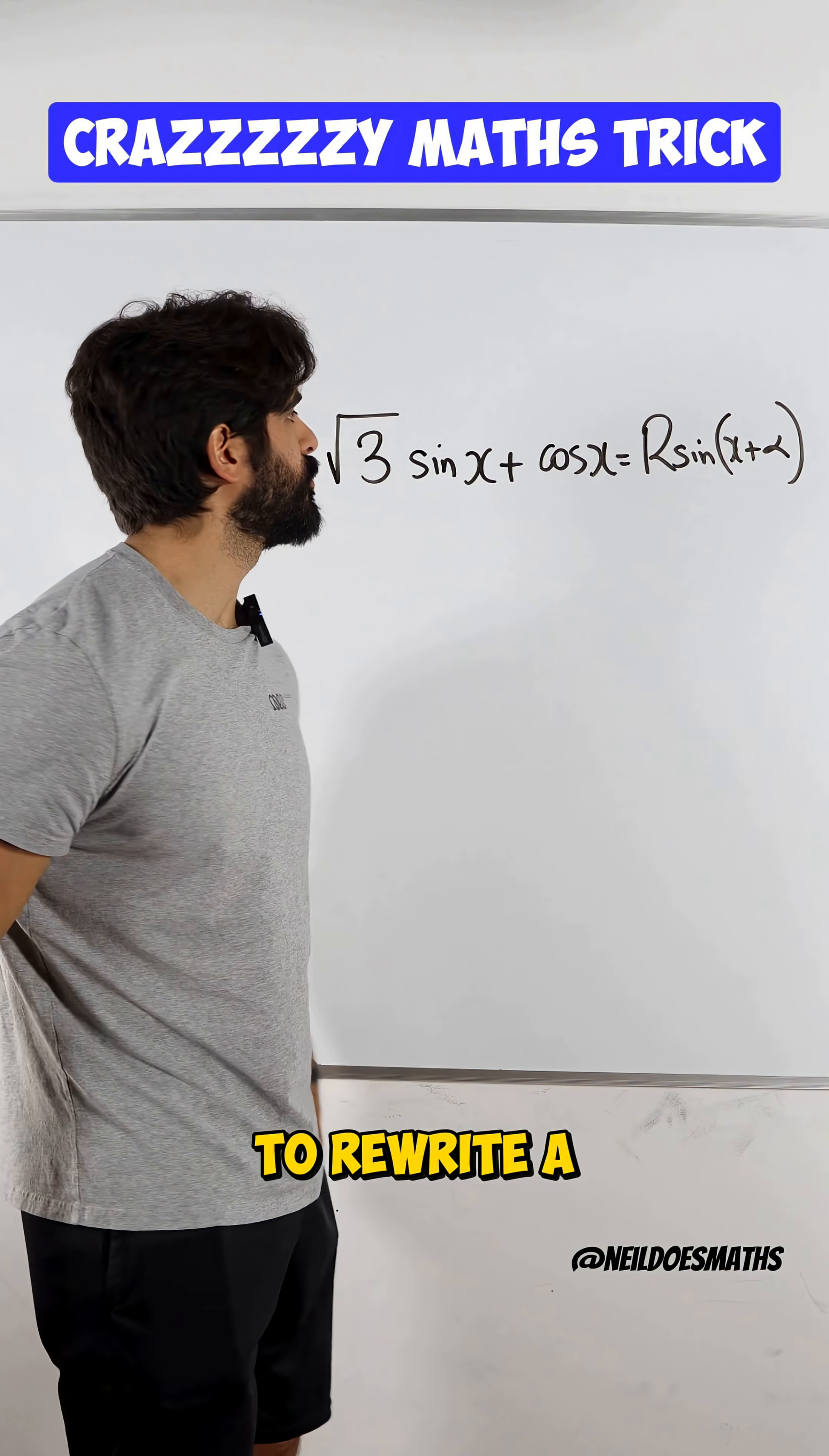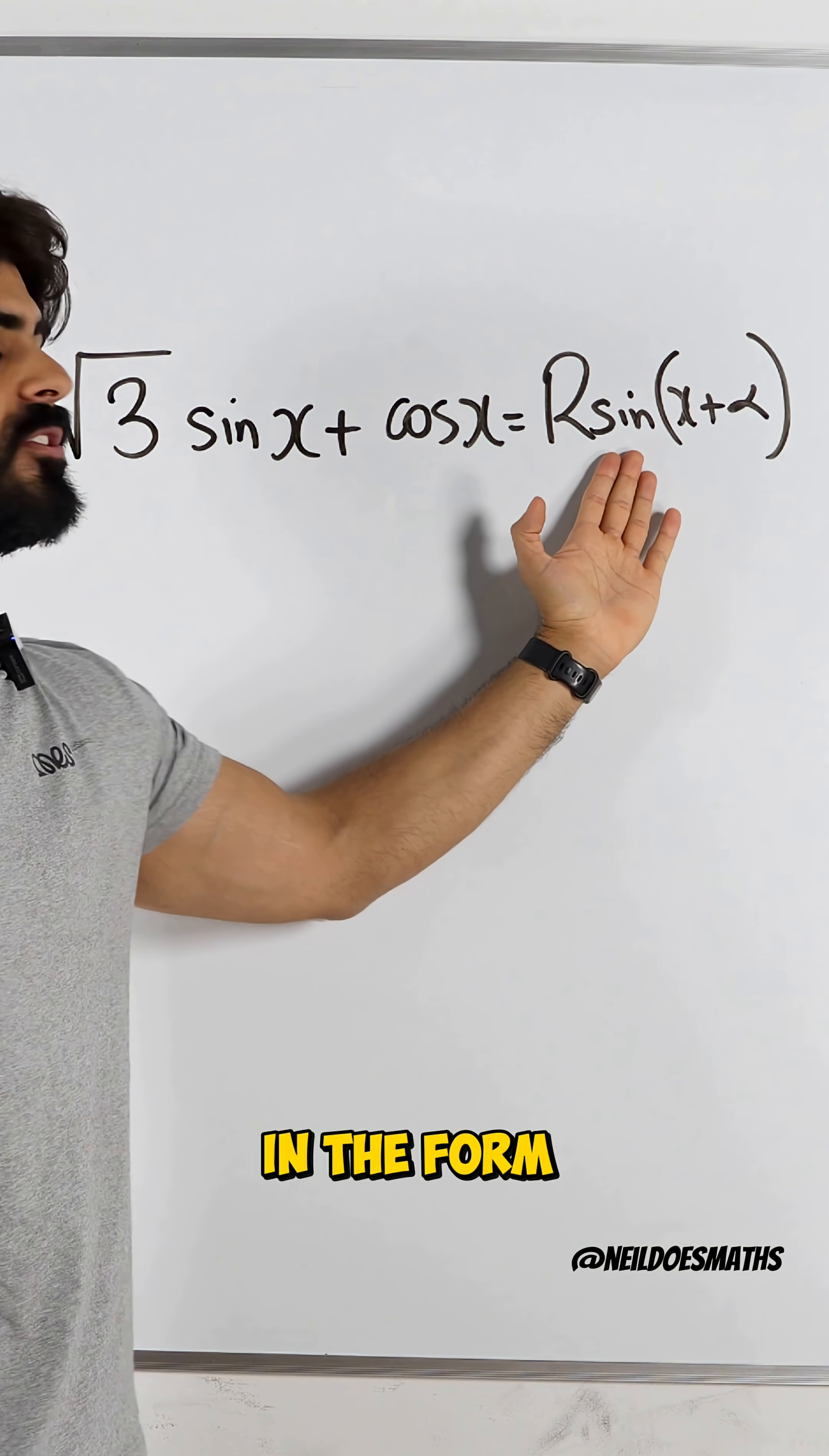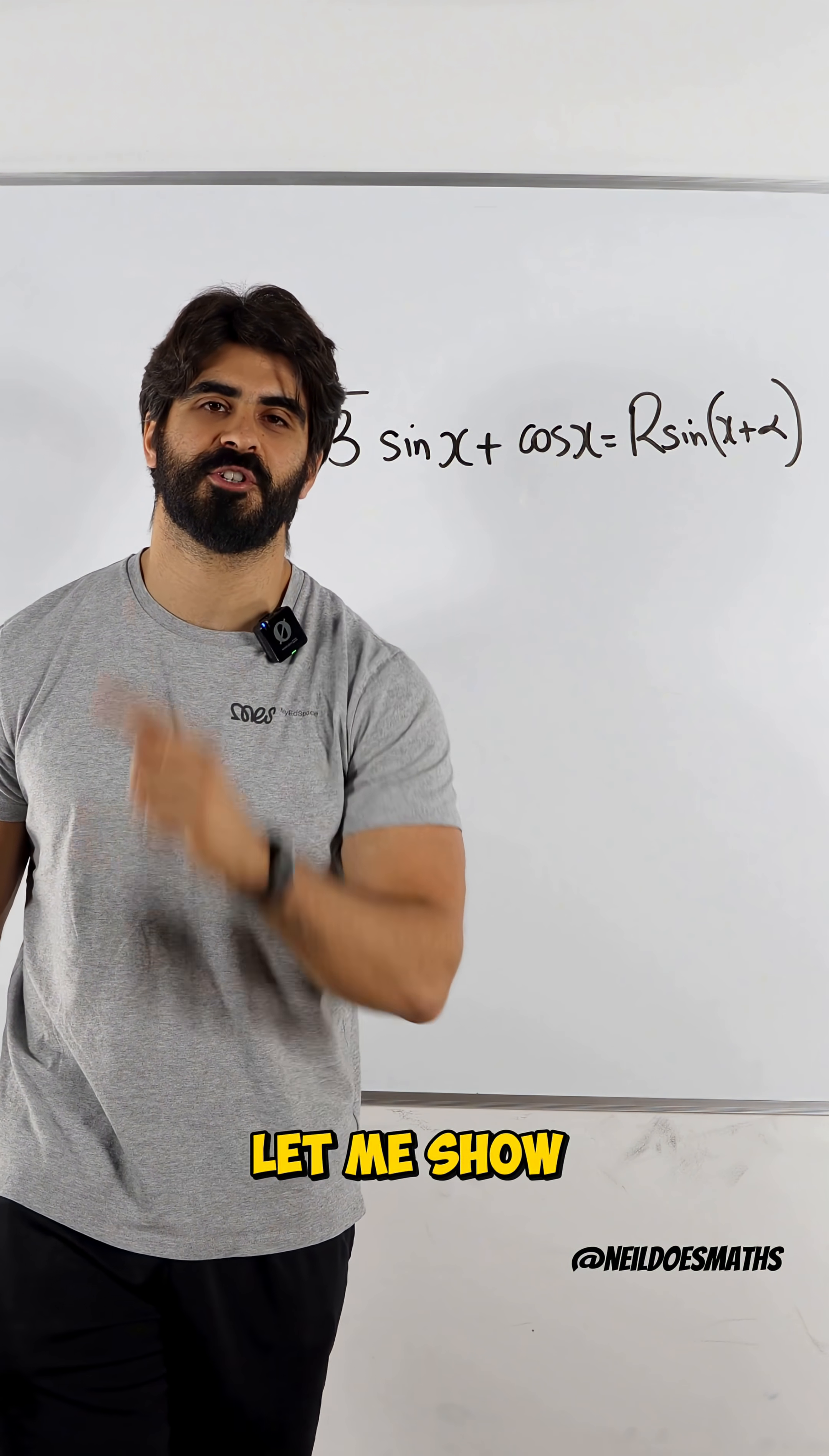Do you know this simple trick to rewrite a linear sum of sine and cos in the form of R sine? This is R transformations. It's to do with the addition rule, but there's a very quick way of doing this. Let me show you how.